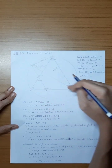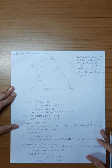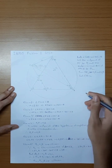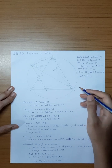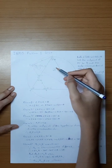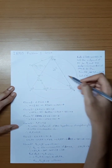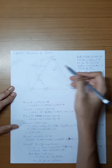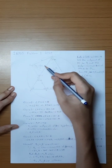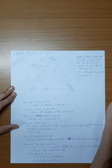Since EO2 equals O2B, angle O2EB is equal to 90 degrees minus theta. But angle O1EB is also equal to 90 degrees minus theta, so O1E and O2E must be collinear.